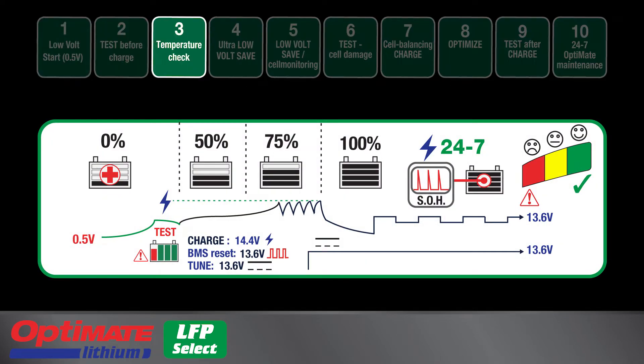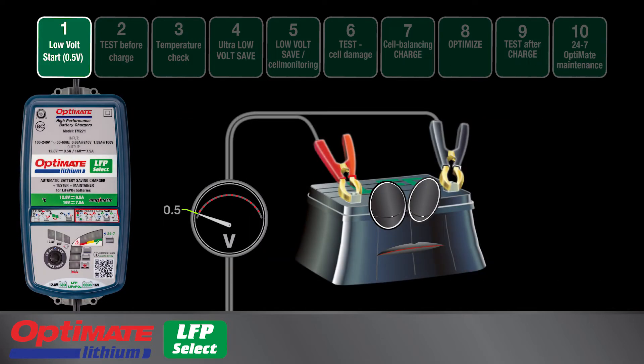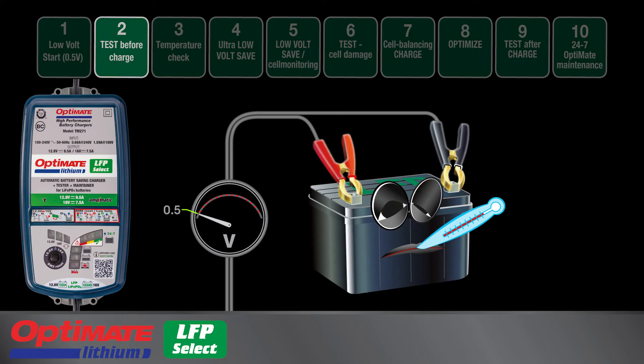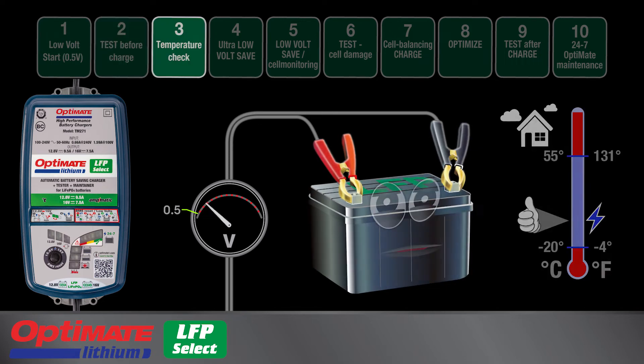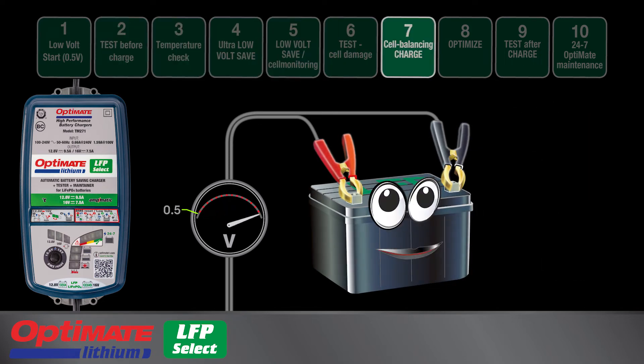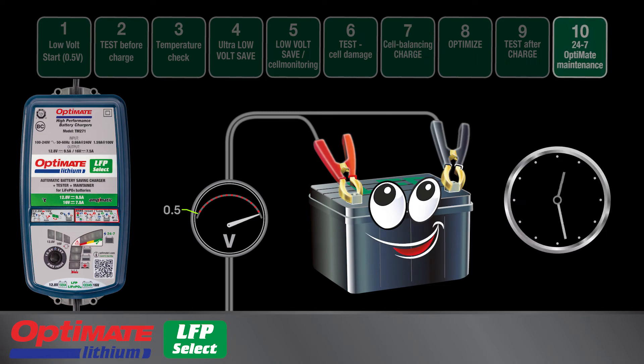There is a 10-step automatic charging algorithm that recovers deep discharge batteries from as low as 0.5 volts. It performs a state of health test, completes charging, and delivers 24-7 maintenance charge when necessary.